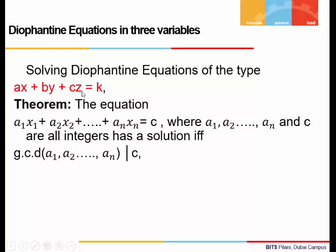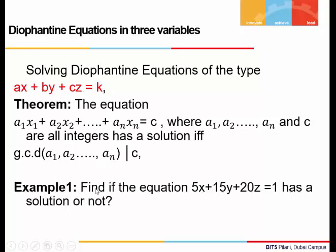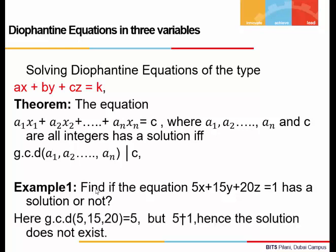We will apply this theorem to our equation ax + by + cz = k. For example, if we are asked whether 5x + 15y + 20z = 1 is solvable or not, we first find the gcd of 5, 15, and 20, which is 5. We then check whether 5 divides the right-hand side. Since 5 does not divide 1, such an equation does not have a solution.